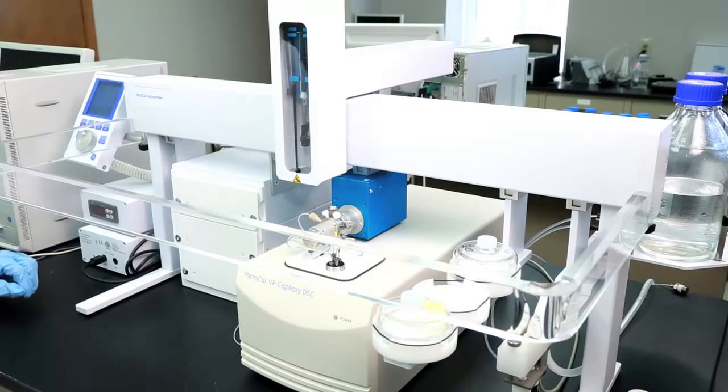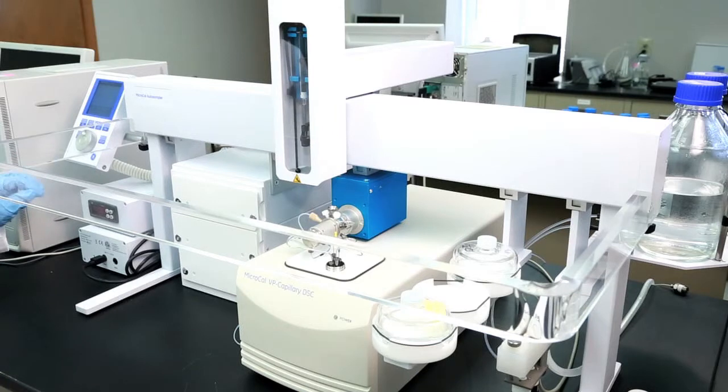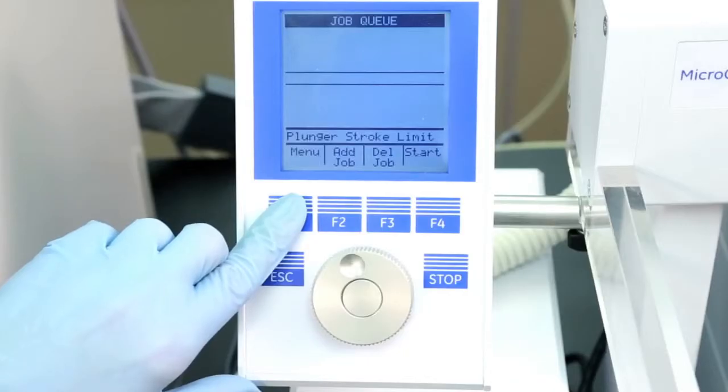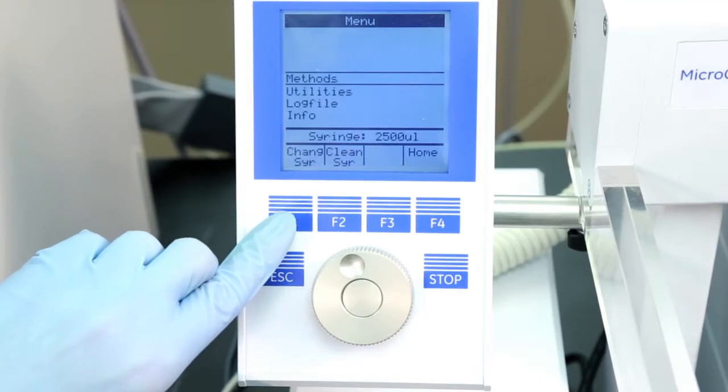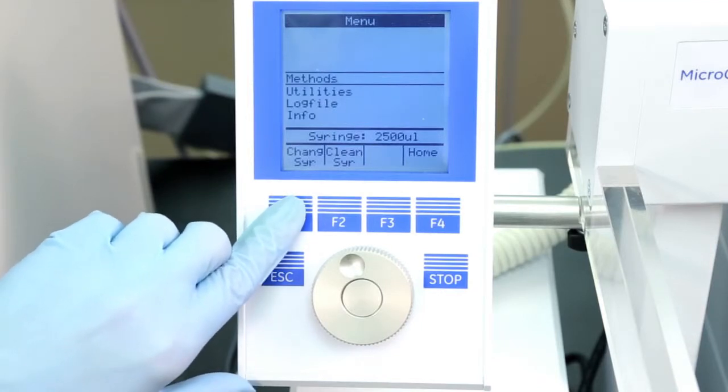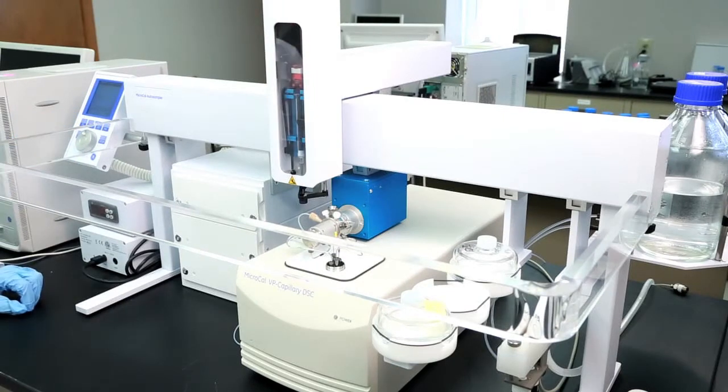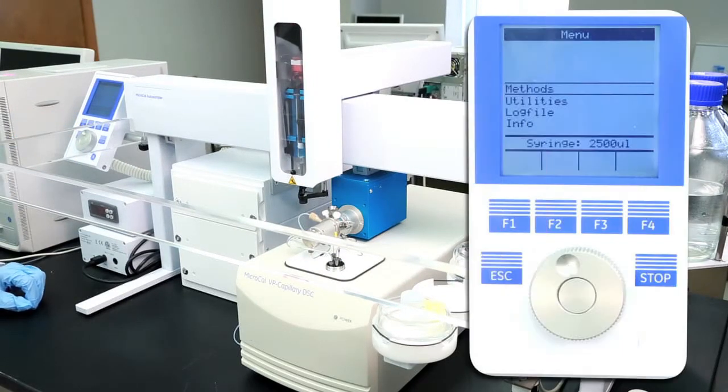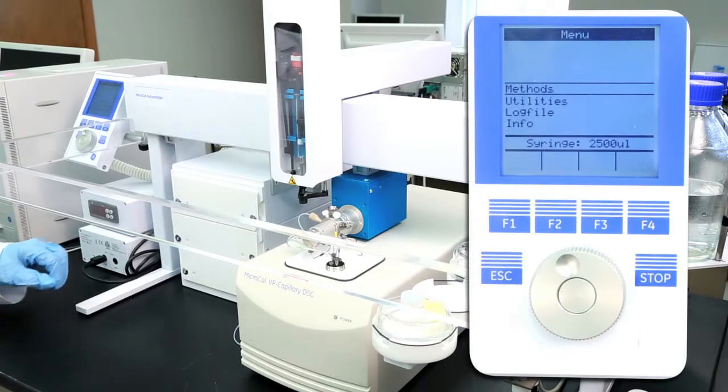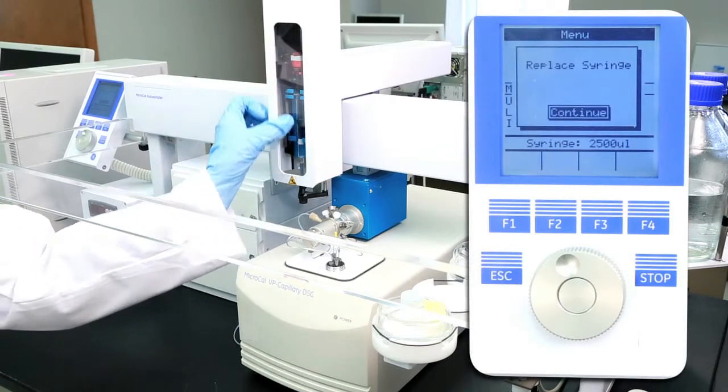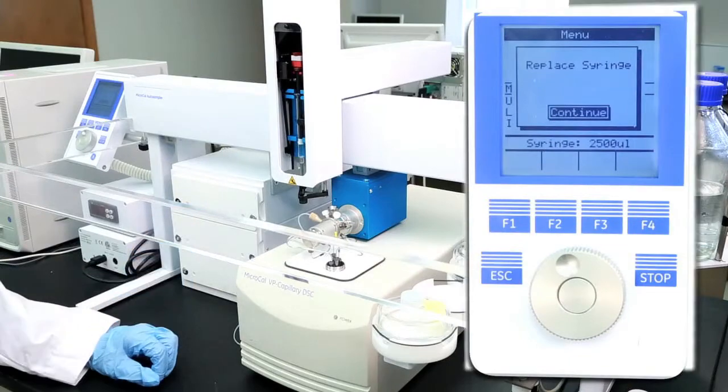To remove the syringe you first have to get it in the appropriate position. Press F1 on the console of the auto sampler and then F1 again to change syringe. The syringe will then move to a position where you'll be able to remove it. Open up the sliding door to access it.